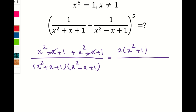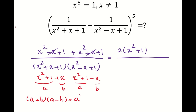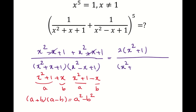For the denominator, I need to simplify a little bit further. I have (x² + 1 + x) times (x² + 1 − x). Let's call these terms a and b respectively. This is the difference of squares identity: (a + b)(a − b) = a² − b². Applying this gives us (x² + 1)² minus x².